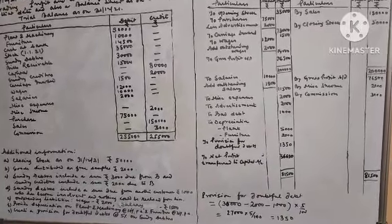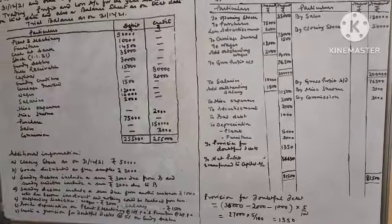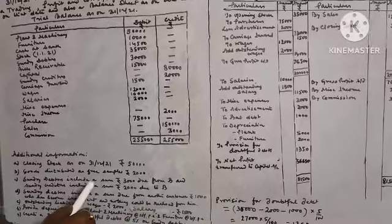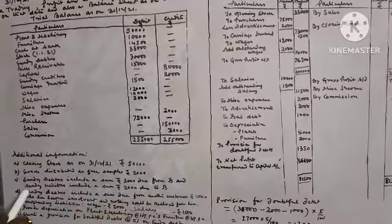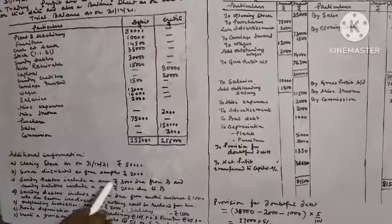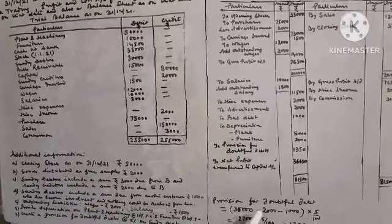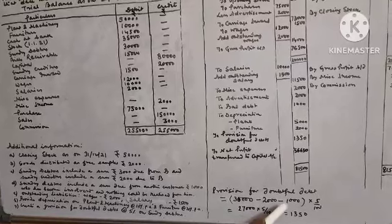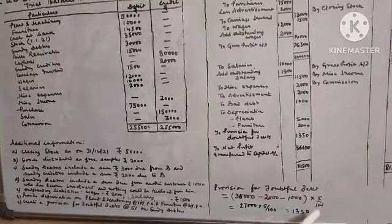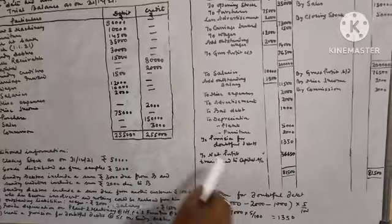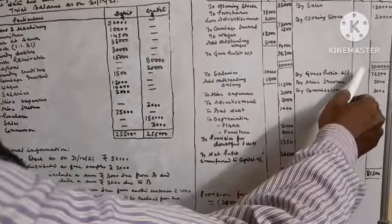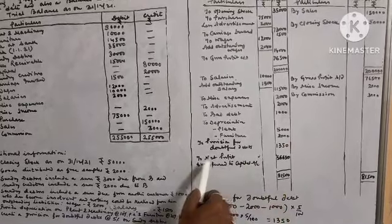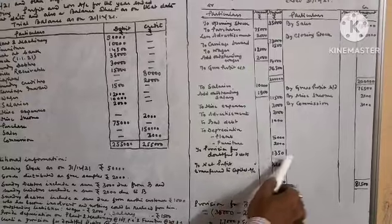Provision for doubtful debts at 5% on debtors. Debtors given 30,000. Sundry debtors include 3,000 due from B and creditors include 2,000 due to B. The smaller amount is 2,000, which is set off: 30,000 minus 2,000 (set off) minus 1,000 (bad debt) equals 27,000. 27,000 × 5% = 1,350. Credit side total 81,500, debit side also 81,500. Balance transferred to net profit to capital account is 56,650.